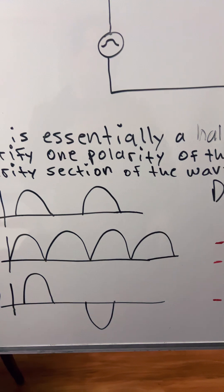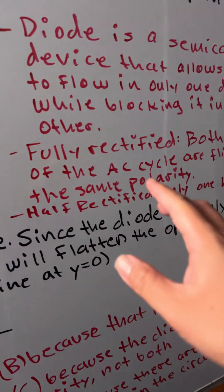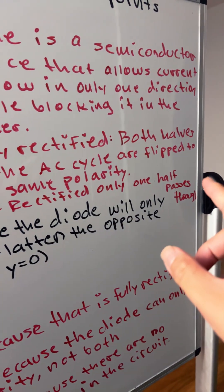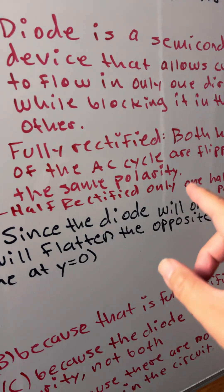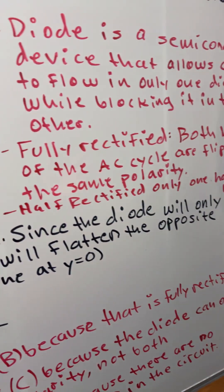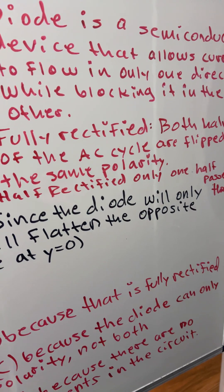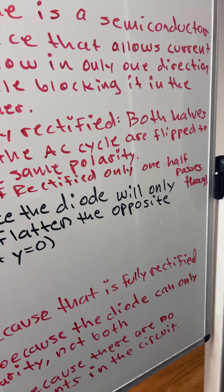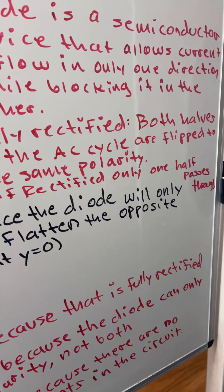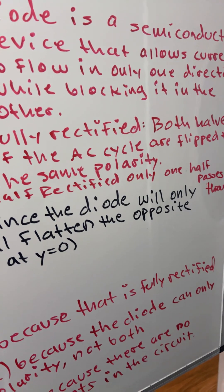A fully rectified wave: both halves of the AC cycle are flipped to the same polarity. A half rectified wave: only half passes through, positive or negative, of the AC cycle.